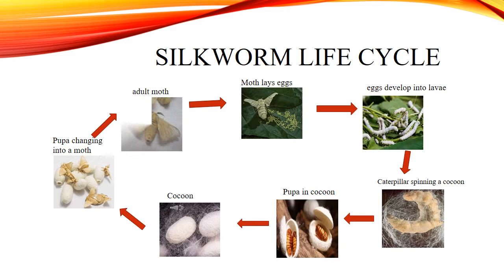Silkworm Life Cycle: The moth lays their eggs. Eggs develop into larvae. Caterpillar spinning a cocoon. Pupa inside the cocoon. Cocoon. Pupa changing into a moth. Adult moth.